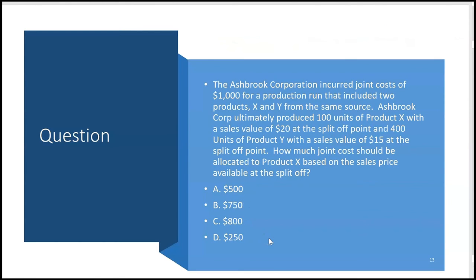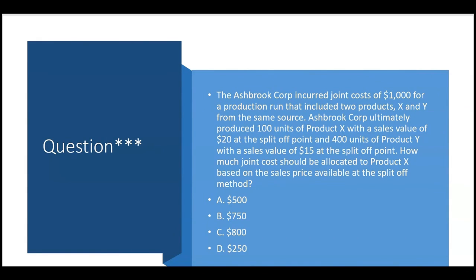Let's try this one. The question asks how much joint cost should be allocated to product X based on the sales price available at the split-off. Ashbrook Corp incurred joint costs of $1,000 for a production run with two products X and Y. They produced 100 units of X with a sales value of $20 at the split-off, and 400 units of Y with a sales value of $15 at the split-off. How much of the $1,000 should be allocated to product X based on the sales price? Leave your answer in the comments below.